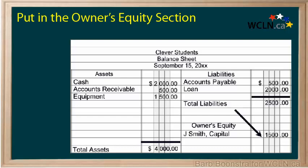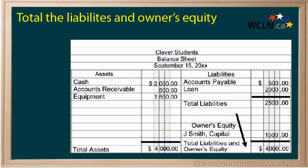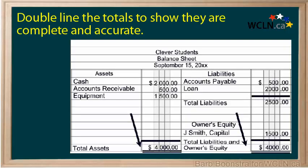Notice that the amount has to equal the total assets. Double underline the two number columns. This is to indicate that the sheet is correct and complete.